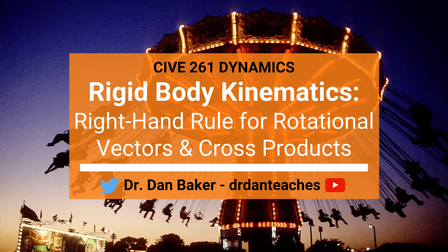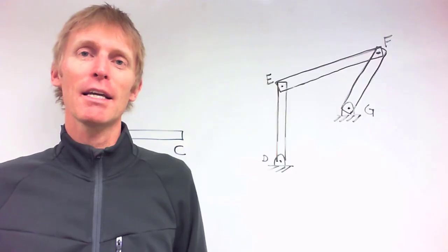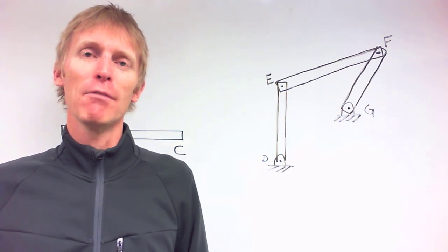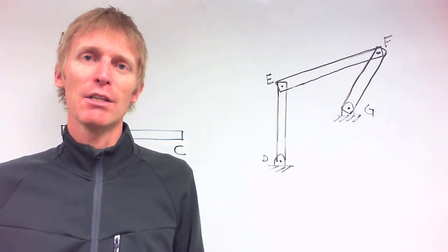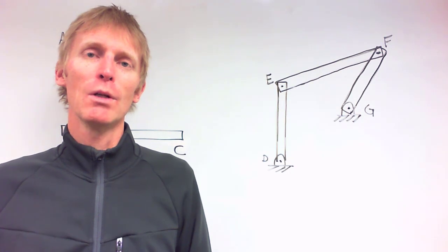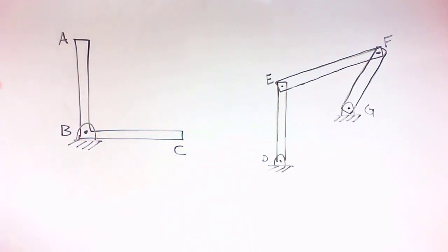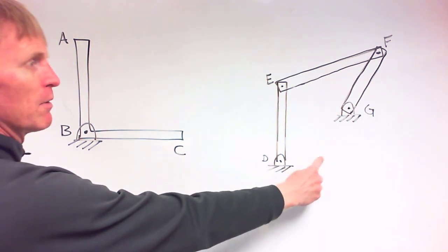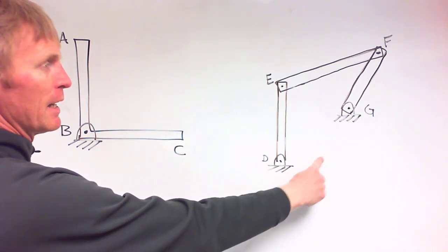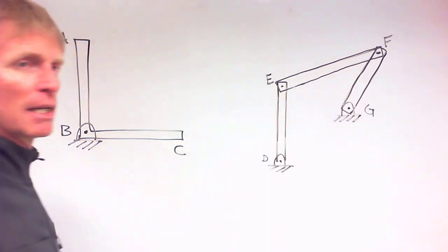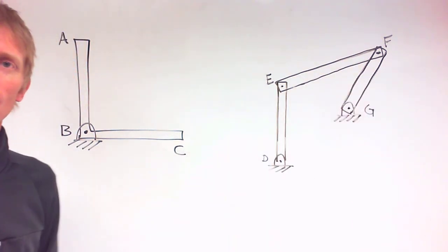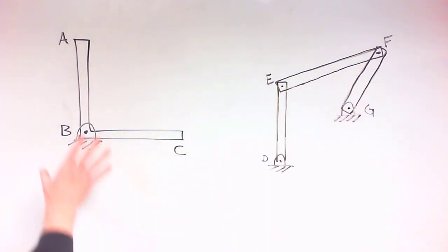Hello students, this is Dr. Dan Baker live for you with a video talking about the right-hand rule. I thought it might be helpful to be right here in front of the screen to show you how we're working the right-hand rule on these various systems. Today we're going to look at a body in fixed-axis rotation as well as a four-bar linkage — four members which are all pinned together.